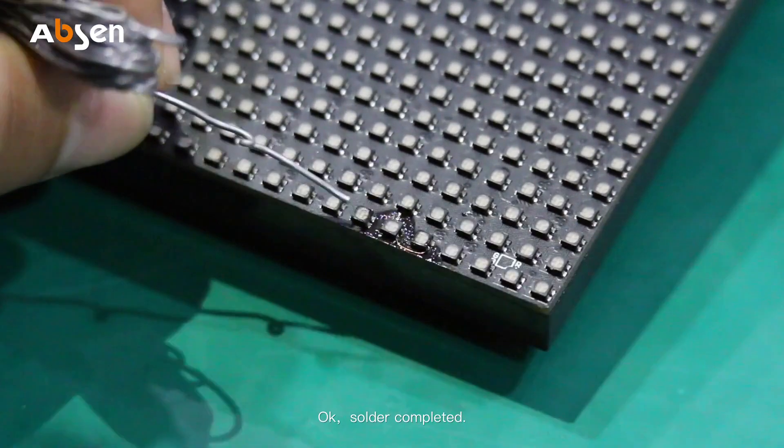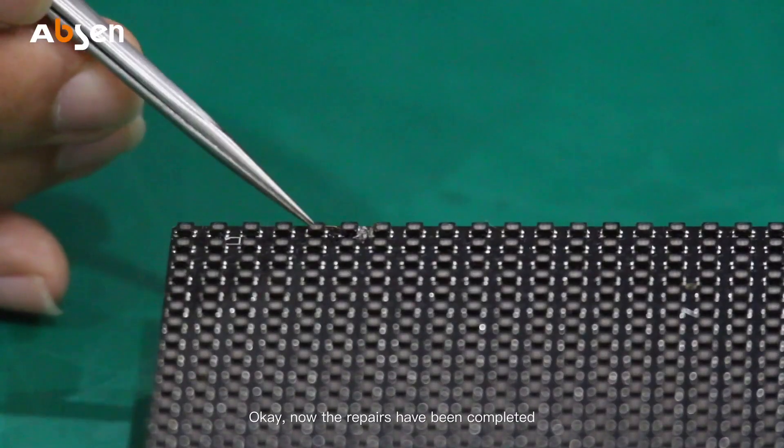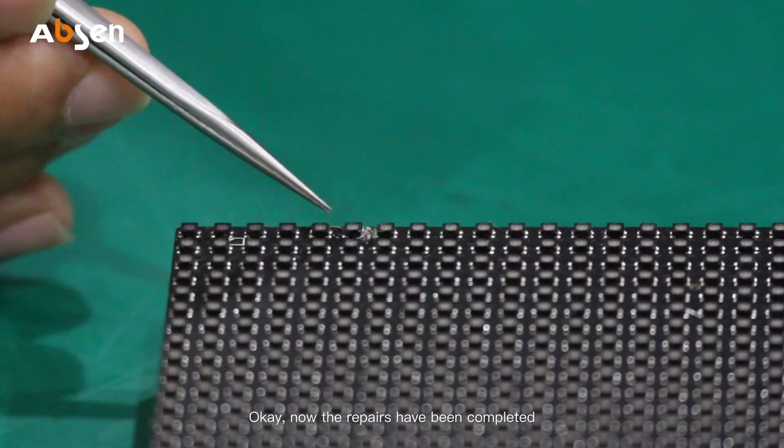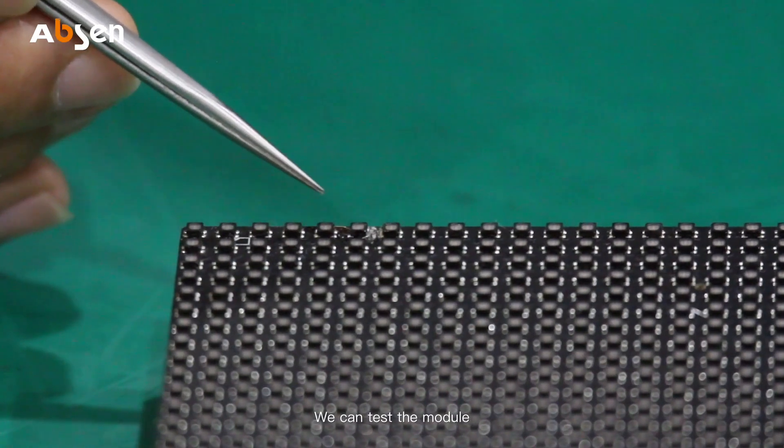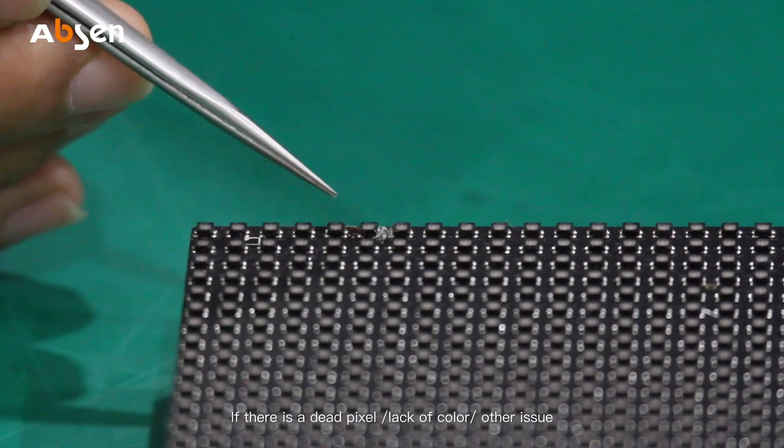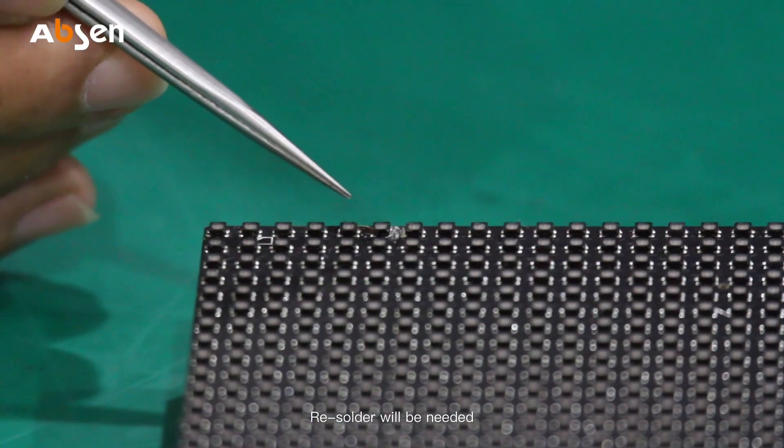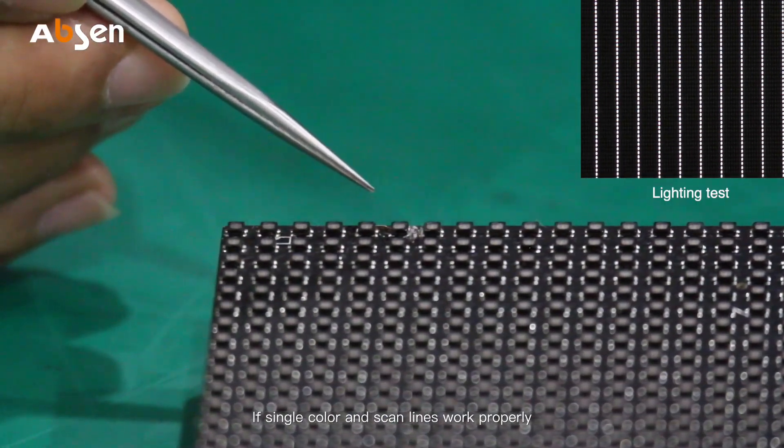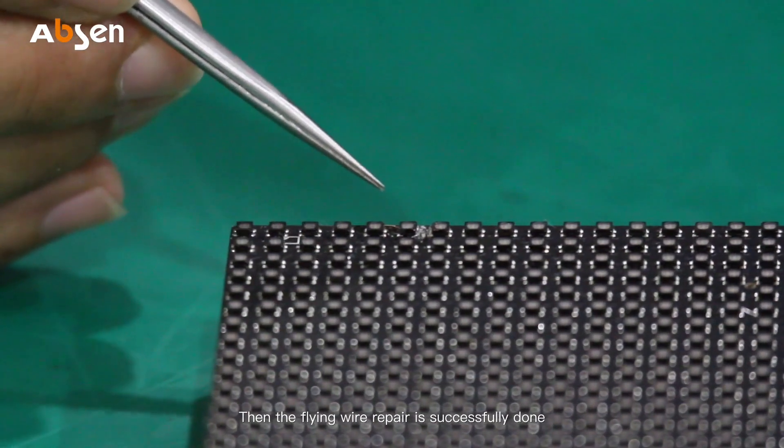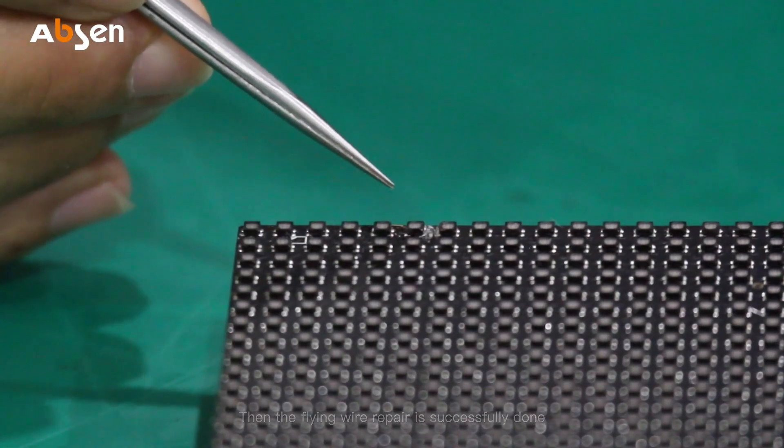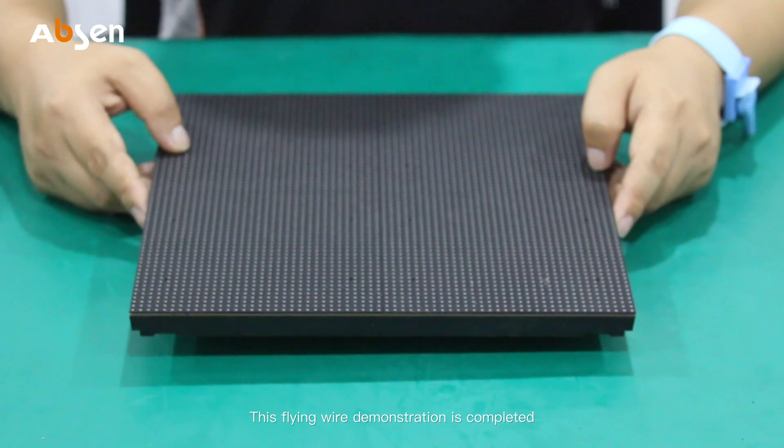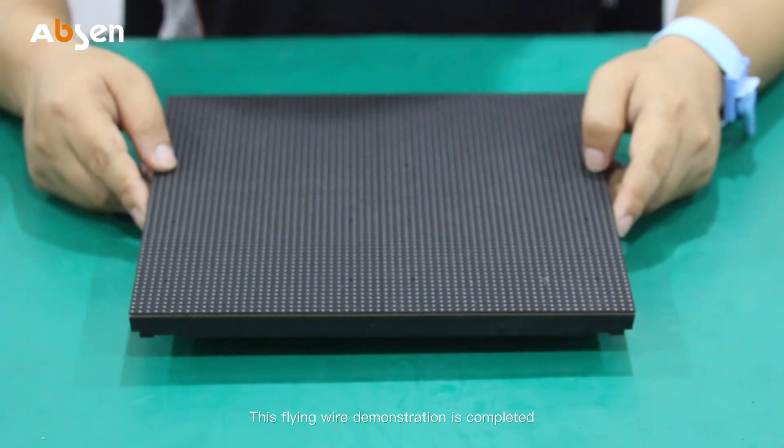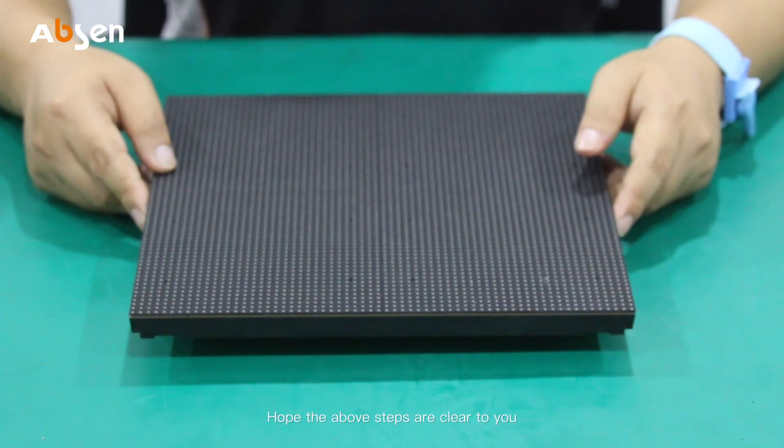Okay, solder now is completed. The repairs have been completed. We can test the module. If there is a dead pixel, lack of color, or other issues, resolder will be needed. If single color and scan lines work properly, then the flying wire repair is successfully done. Put back the mask. This flying wire demonstration is now completed. Hope the above steps were very clear to you.